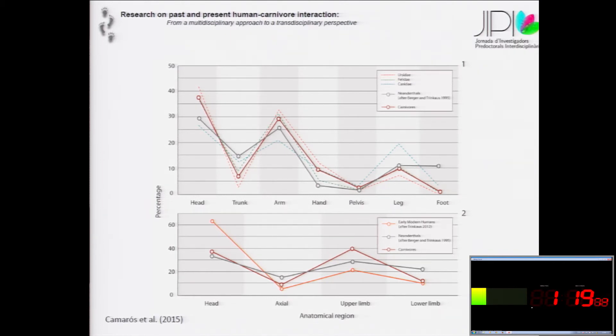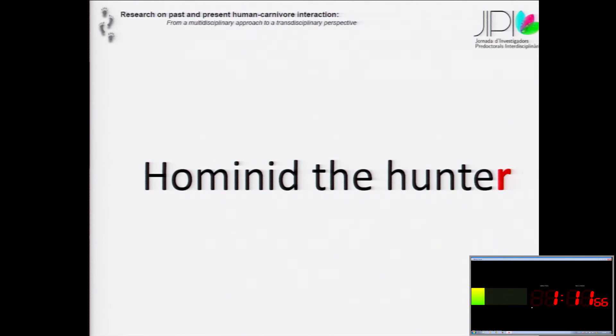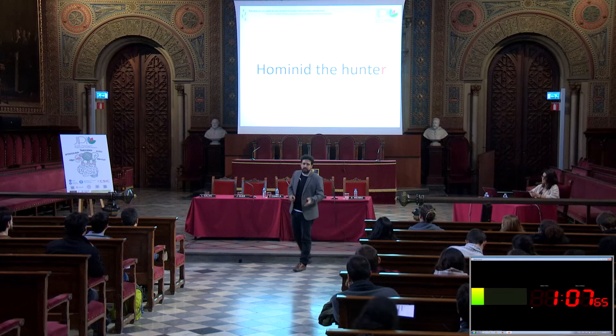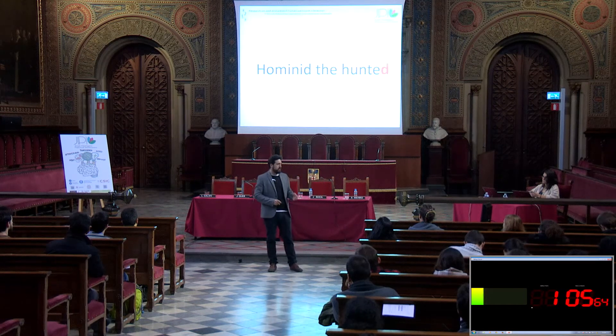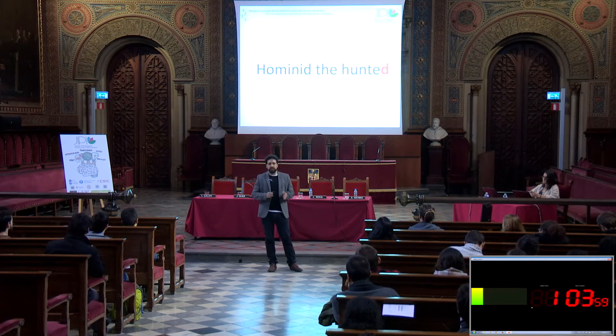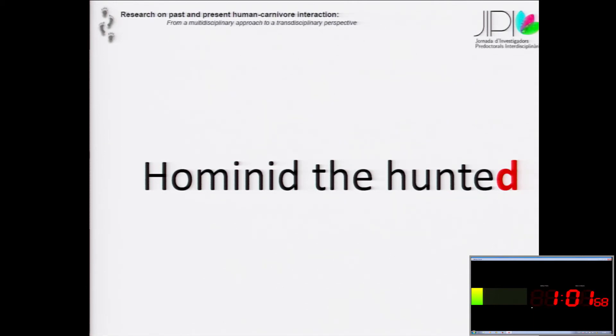On the upper image, you can see the case of Neanderthals. And on the below graphic, you can see the case of our own species. So it was then clear that during the Paleolithic, during the Pleistocene, hominids were not just excellent hunters. They were also hunted hominids. And this means that predation was probably a very important pressure and something that has influenced the development of our own human behavior.